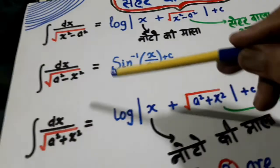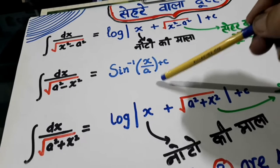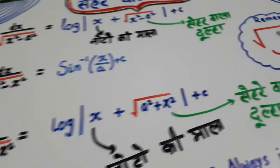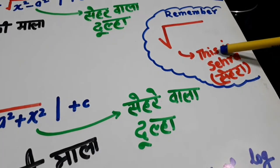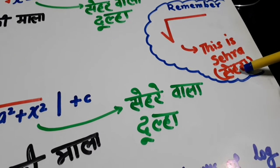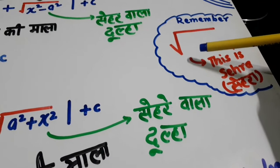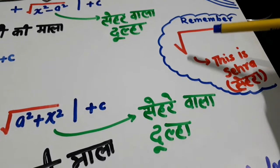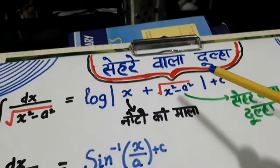Out of the three, two are in terms of log and the third one is in terms of sine inverse. This symbol of square root — this is 'sere.' What I did before was without sere, there was no square root. Now there is a square root, meaning sere has come here. So this 'dula' has become 'sere wala dula.'